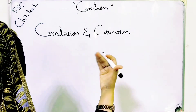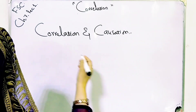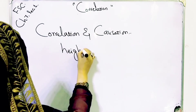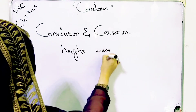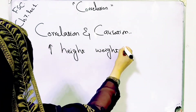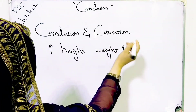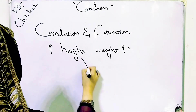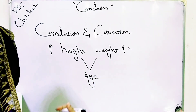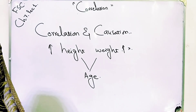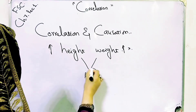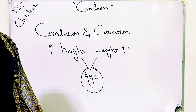When we say height and weight are correlated — if height increases, it is not necessary that your weight will also increase. This is not necessary. But there is a third variable involved: age. As age increases, both height and weight increase. So age is the third variable involved. That is called correlation and causation.